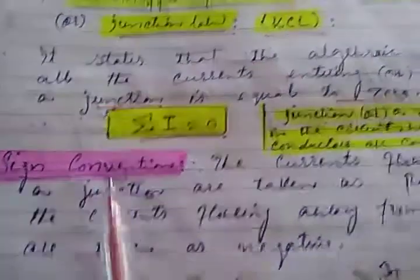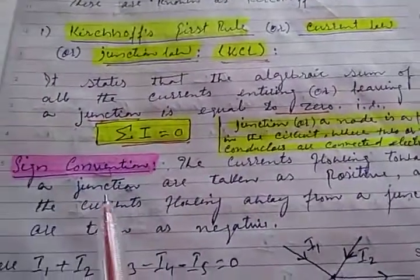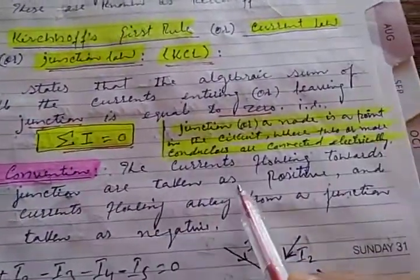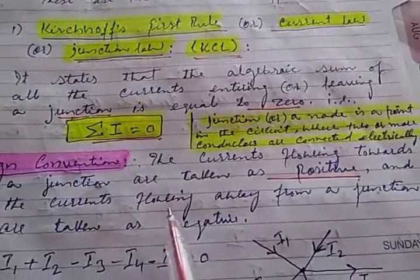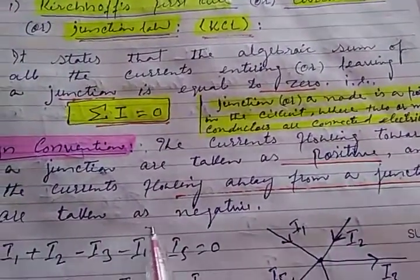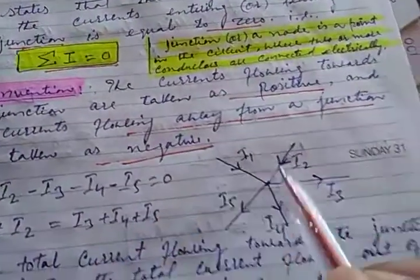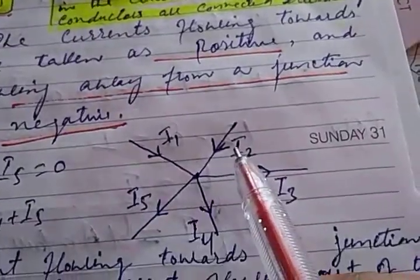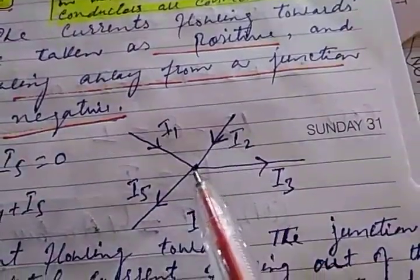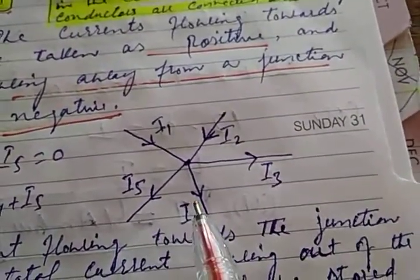Here we use sign conventions: currents flowing towards the junction are taken as positive, and currents flowing away from the junction are taken as negative. You can check this in the diagram — here i1 is flowing towards the junction, i2 is flowing towards the junction, but i3 is flowing out of the junction.